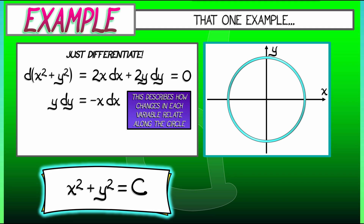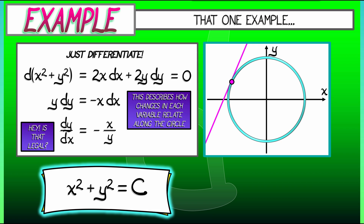If you move a small amount on that circle, what are the changes in x and y doing? This is related to the problem of finding a tangent line to the circle at a particular point. To get the equation of that line, you really want dy dx. How do we get that? Just work with the differentials: take the previous expression, divide both sides by y and by dx, and you get dy dx equals minus x over y. Wait — is that legal? Are you allowed to divide by differentials? Sure, no problem, go for it.